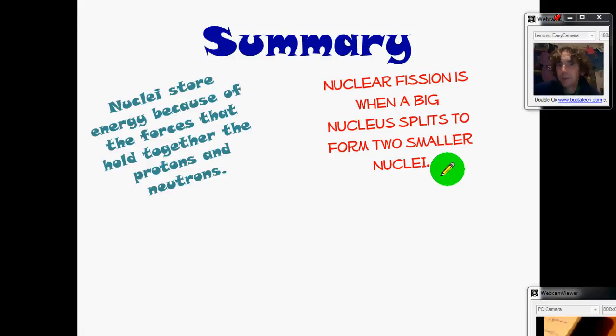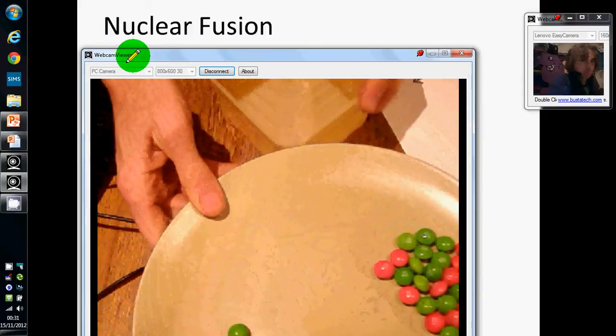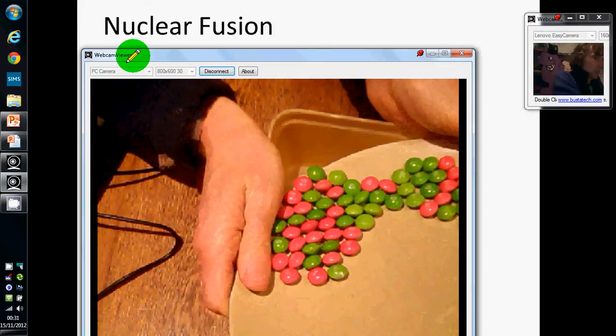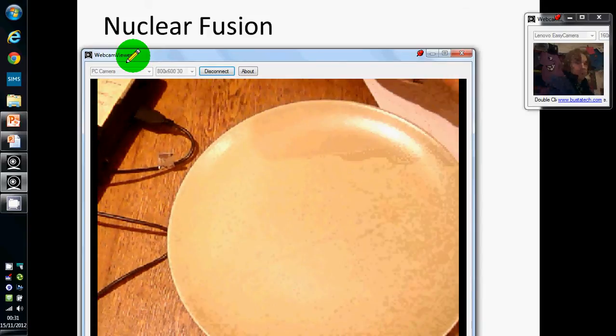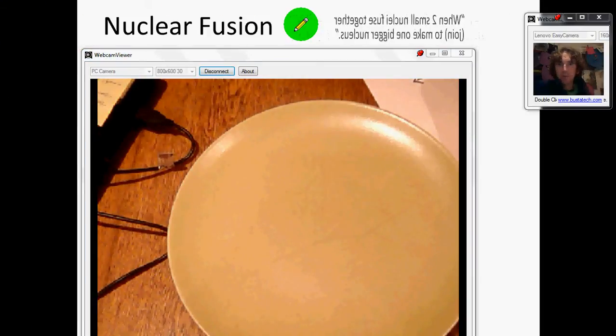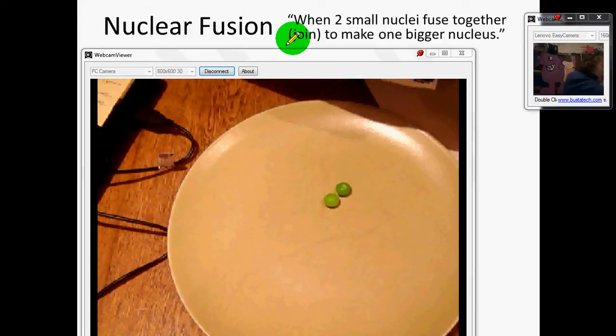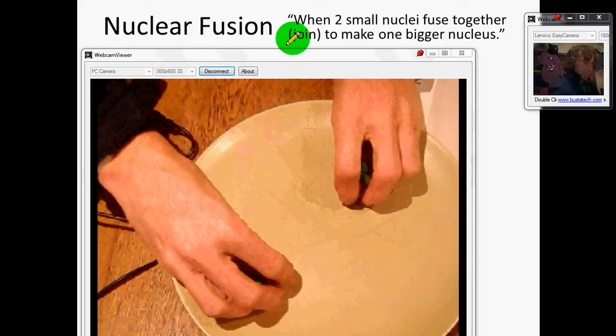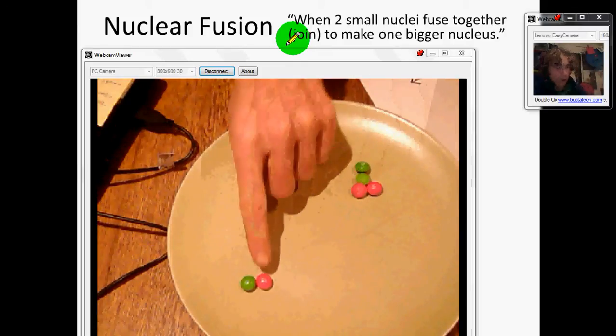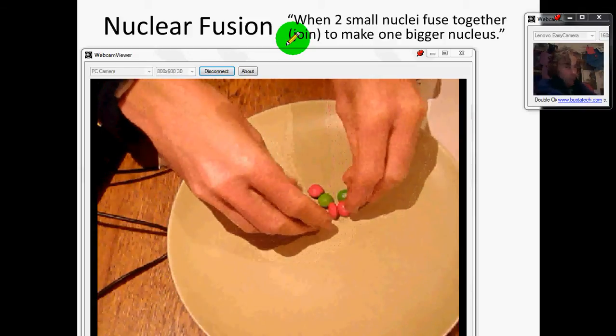A new thing: nuclear fusion. Nuclear fusion is when two small nuclei fuse together to make one big nucleus. Let's start off with a couple of small nuclei—let's try a hydrogen with one proton and a helium with two protons. If they fuse together, they make one bigger nucleus.